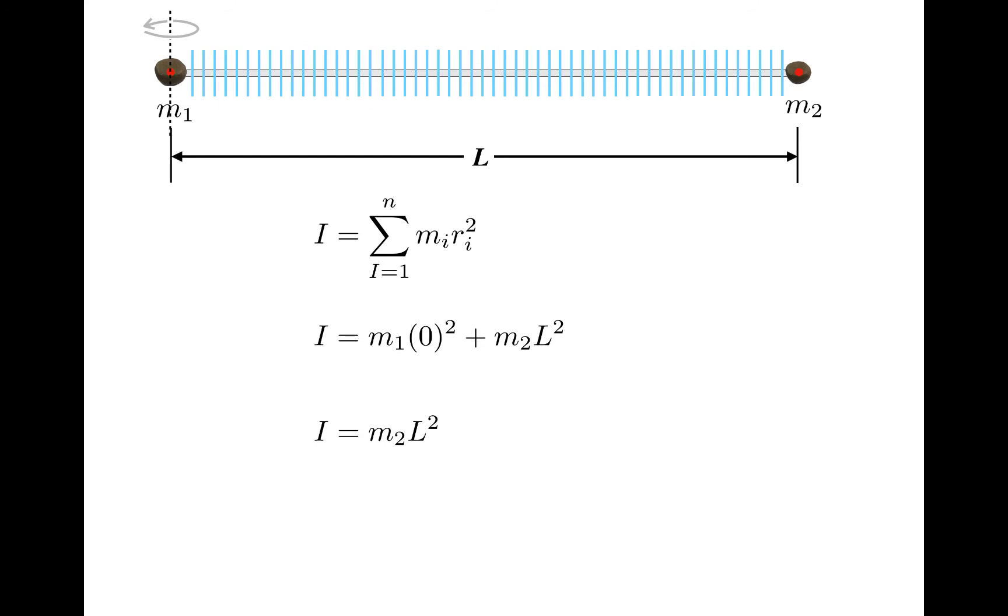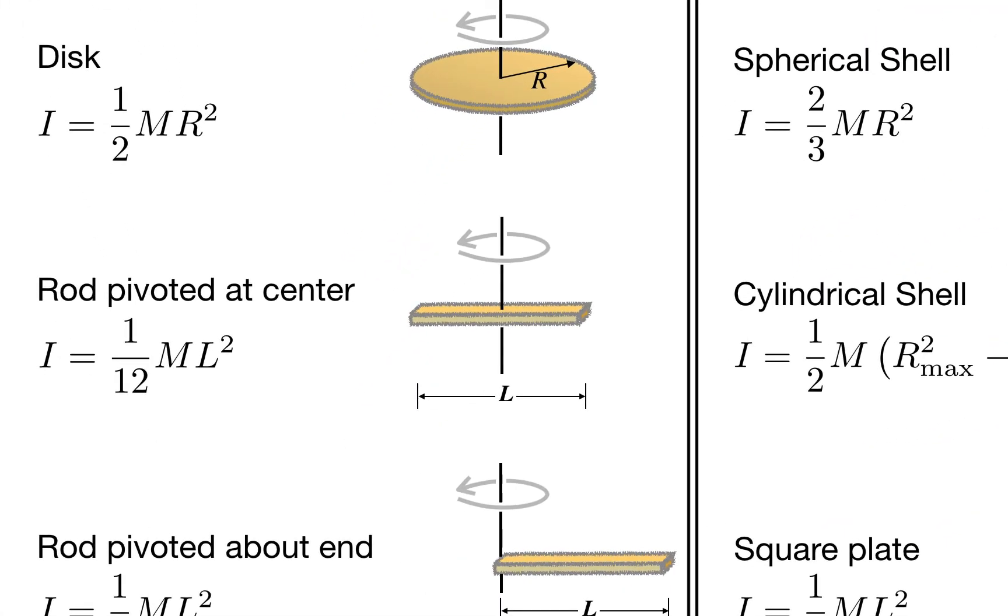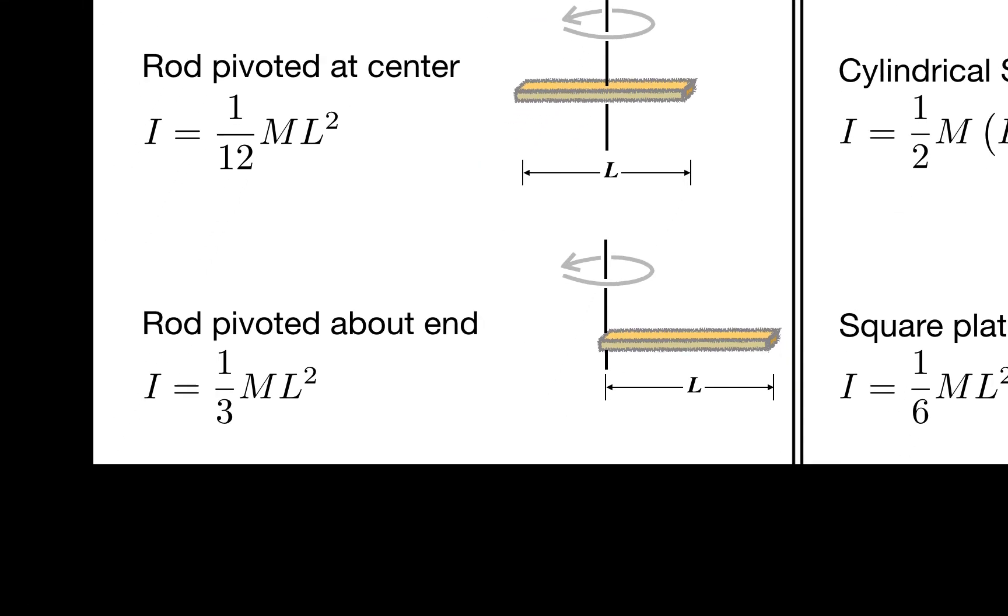I'm going to skip to the punchline and give you a table with the rotational inertia of several common shapes. You'll find a similar table in almost any physics textbook. Here's the stick rotated about its central axis, and here's the stick rotated about its end.